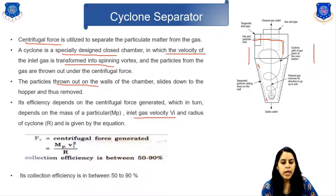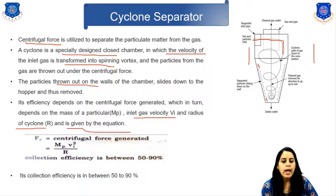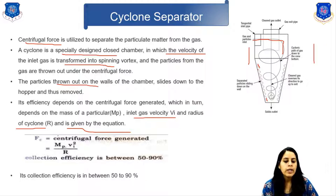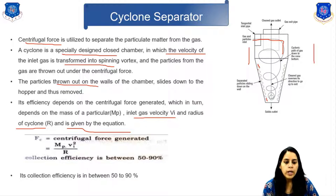The centrifugal force is given by: Fc equals MP times Vi squared divided by R. Collection efficiency is between 50 to 90 percent.